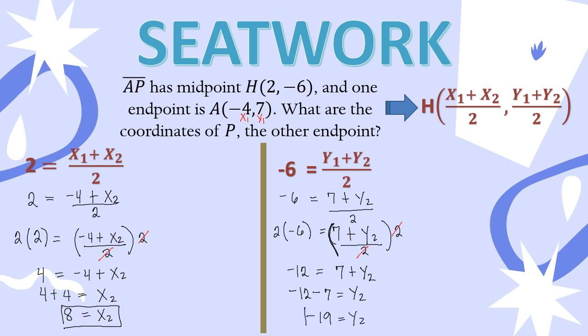We have our y sub 2 already. Since we are asked to find the coordinates of point P, or the other endpoint, our final answer must combine x sub 2 and y sub 2 as coordinates. So we have 8 and negative 19. Therefore, we are done — the coordinates of the other endpoint P are 8, negative 19. This is our simple process to find the coordinates of the other endpoint given one endpoint and its midpoint.